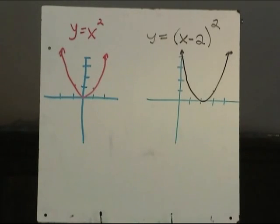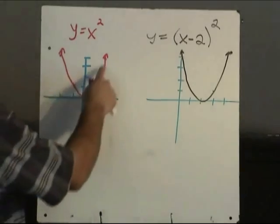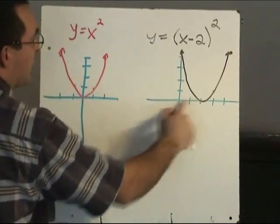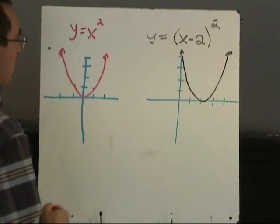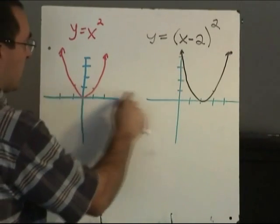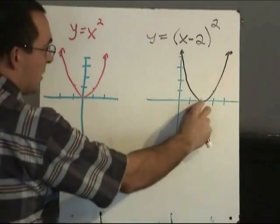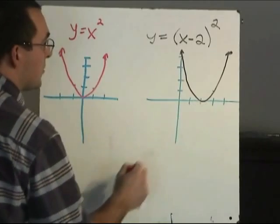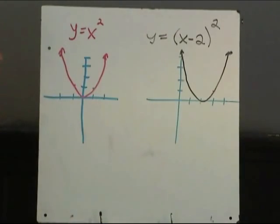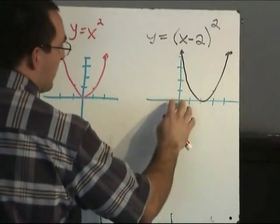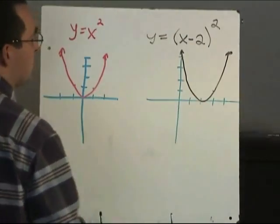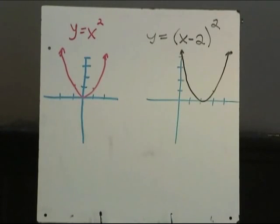We can see it looks exactly the same as the graph y equals x squared, except the graph has moved right 2. This point used to be at negative 1, 1 — it's now at positive 1, 1. The vertex which was at 0, 0 is now at 2, 0. So the y values haven't changed at all, but the x values have all gotten 2 bigger. The picture looks like it has been moved right 2. So when we replace x with x minus 2, the graph will move right 2.